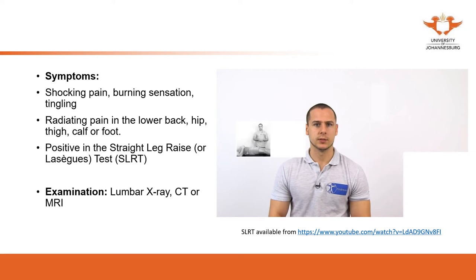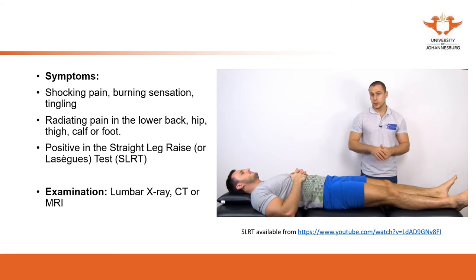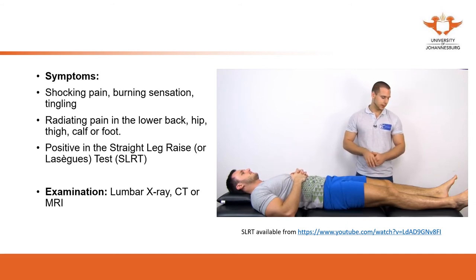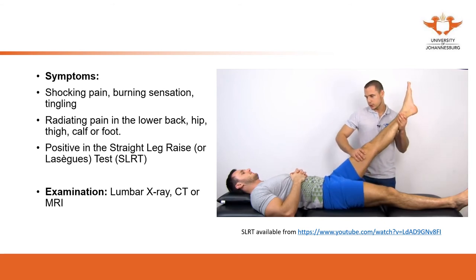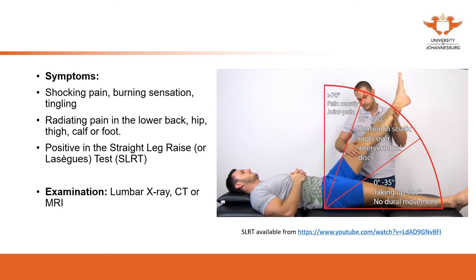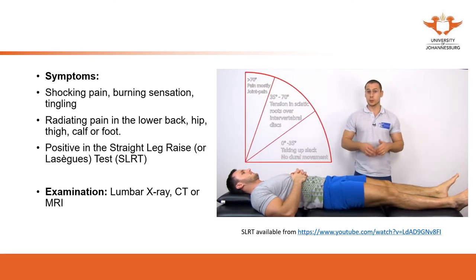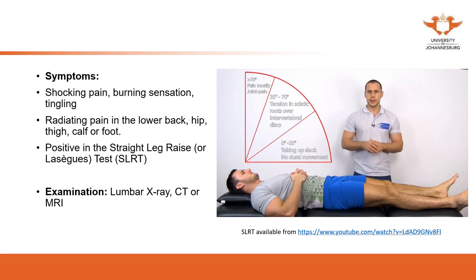You can also perform the Straight Leg Raise Test (SLRT). Apart from physical examination, you also need to consider imaging — X-ray, CT, or MRI. To conduct the test, have the patient in supine lying position. Start by assessing the unaffected leg first, then flex the patient's leg at the hip joint while keeping the knee fully extended, and ask the patient to tell you once symptoms occur. Radicular symptoms are normally expected between 35 to 70 degrees of hip flexion.